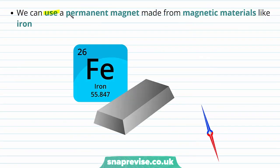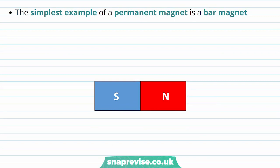Firstly, we can use a permanent magnet made from magnetic materials like iron. And these permanent magnets have their own magnetic fields that will cause a compass to move if it's brought nearby. The simplest example of a permanent magnet is a bar magnet, and you've probably seen these before. Every bar magnet has a south pole and a north pole, just like a compass has a south pole and a north pole.